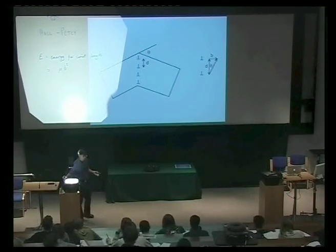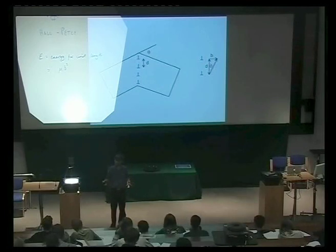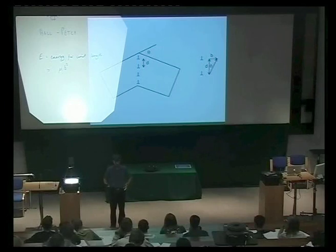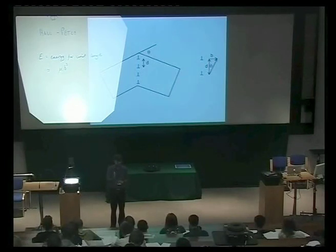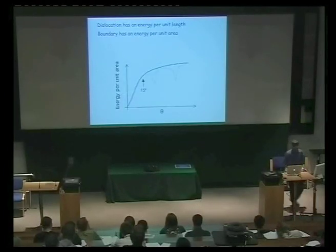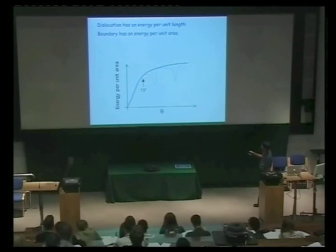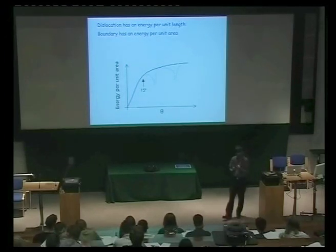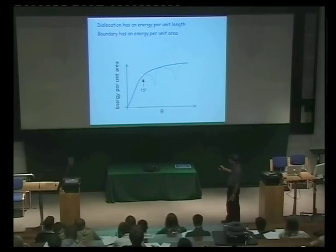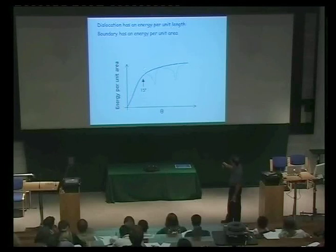It follows that we can model the energy of a grain boundary per unit area by simply adding up the energies of the individual dislocations. The energy of the boundary per unit area will be greater if the spacing of the dislocations is finer, because then we are packing more and more dislocations into the same plane. The energy of a grain boundary can be calculated. This is how boundary energy varies with misorientation, with this relationship valid up to about 15 degrees of misorientation. This is known as the Reed-Shockley equation.